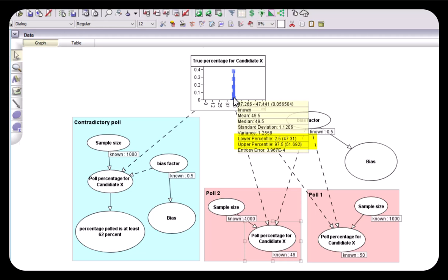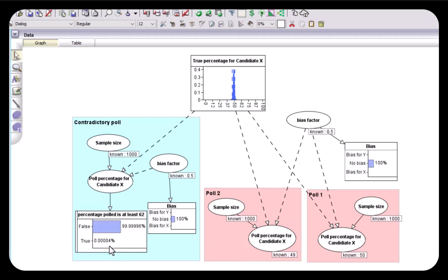But now we can use this model to give an explicit answer to the question: what's the probability under these circumstances that this different poll would result in at least 62 percent of the people expressing support for candidate X? All we've done here is we've added this boolean node which is simply true if that value is greater than or equal to 62. Let's look at this value here and what you can see is that the probability of the percentage poll is at least 62 is 0.00004 percent, and that's equivalent to a one in 2.5 million chance.